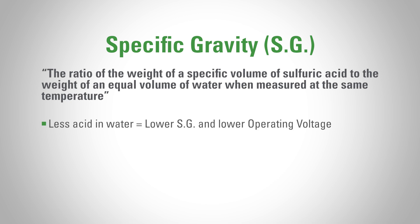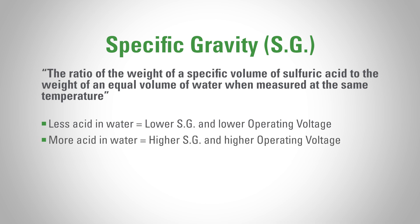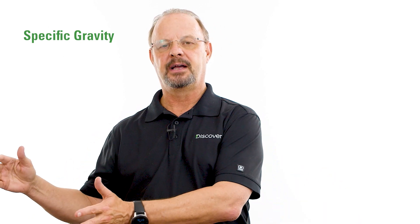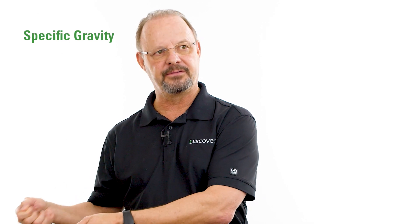Less acid in water equals lower specific gravity, and ultimately that translates into lower operating voltage. More acid in water equals higher specific gravity and higher operating voltage. For all you battery guys out there who used to test batteries with a hydrometer, a lower reading on the hydrometer would equate to a lower voltage reading on the battery with a voltmeter.